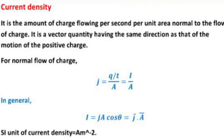Now, current density. What is current density? It is the amount of charge flowing per second per unit area normal to the flow of charge. It is a vector quantity having the same direction as that of the motion of the positive charge. It is denoted as J. Since Q upon T means current I, current density J can be written as J equal to I upon A.